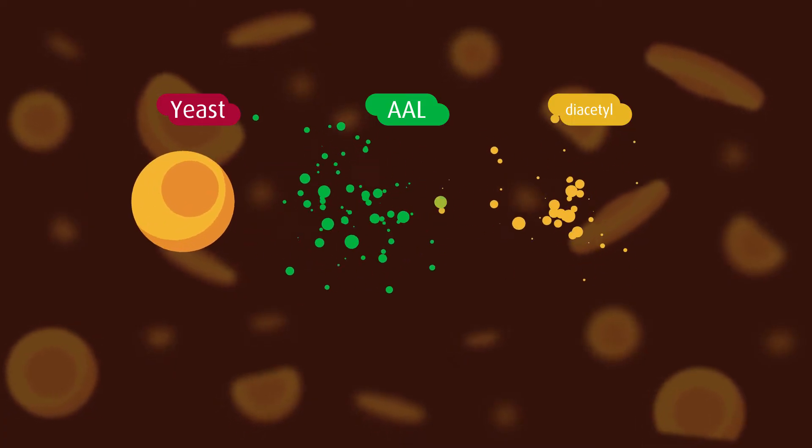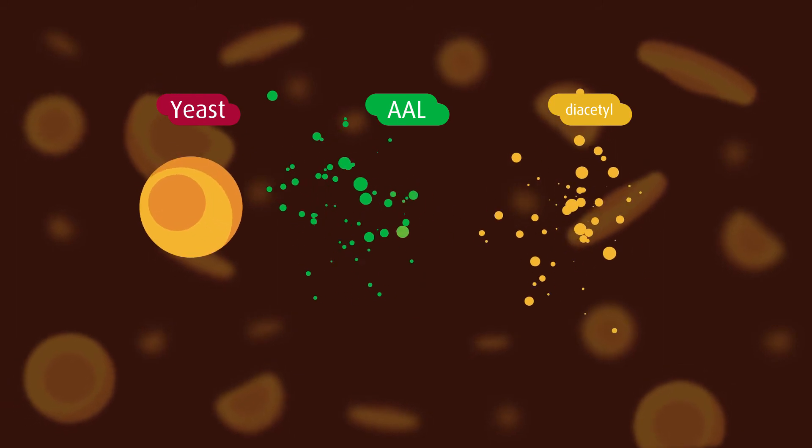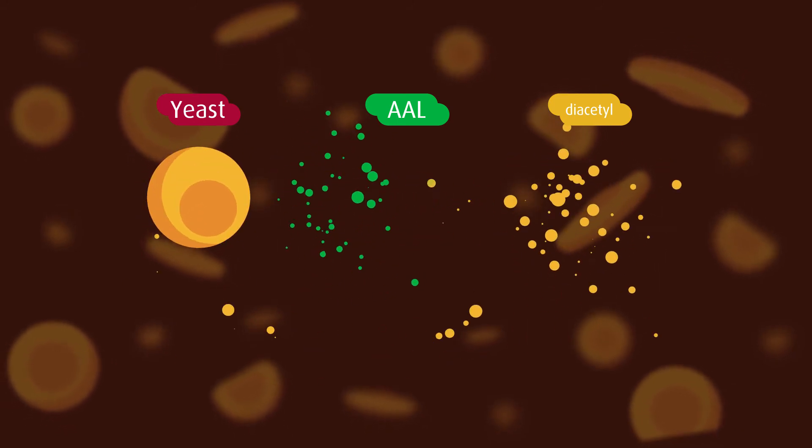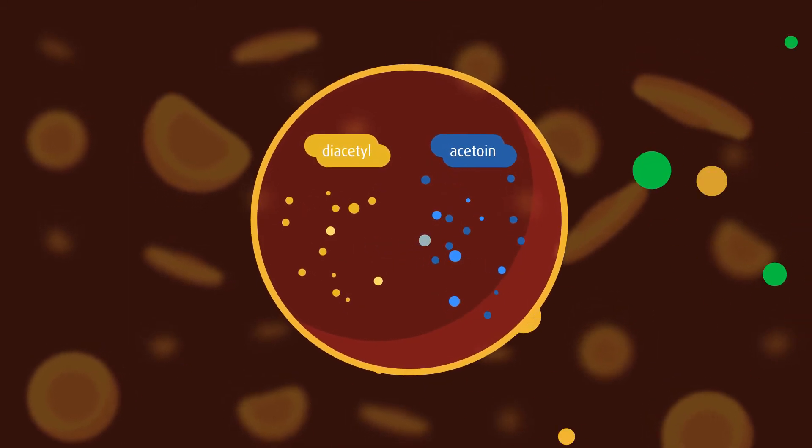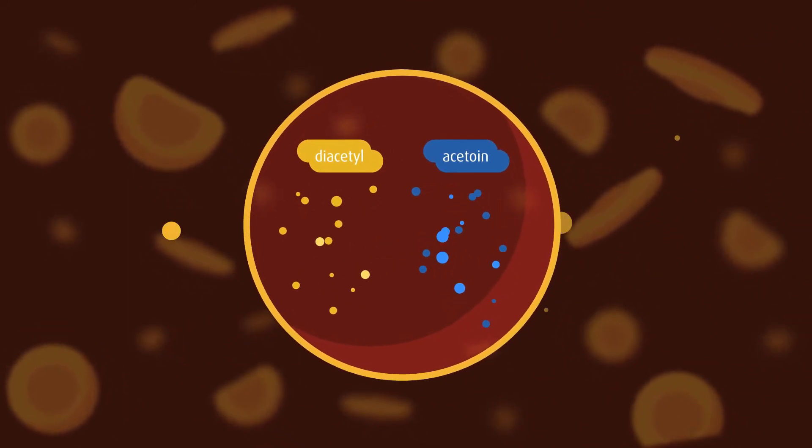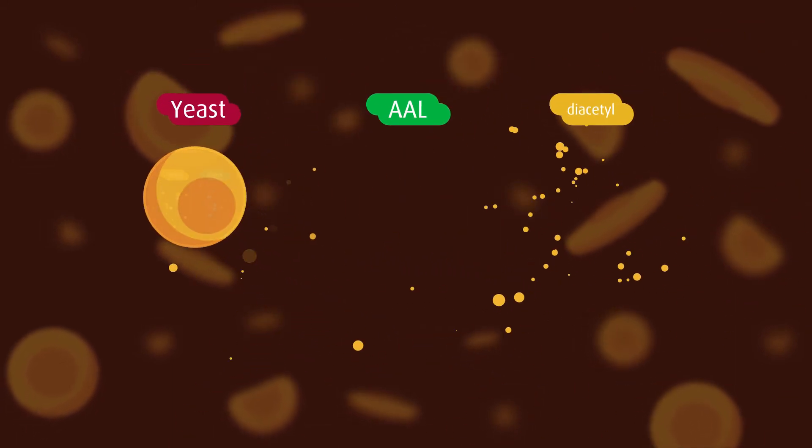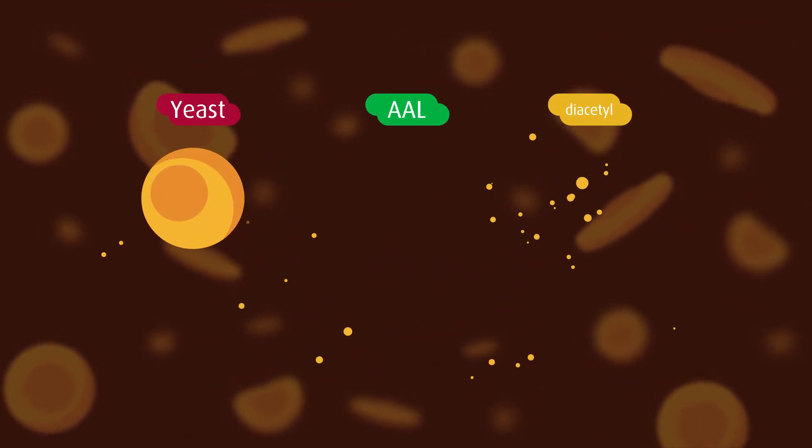Usually this happens during maturation, when yeast has stopped producing AAL. At this point, the backlog is converted into diacetyl and absorbed by the yeast, and then converted into acetyl. This conversion is often the last and slowest part of the brewing process.